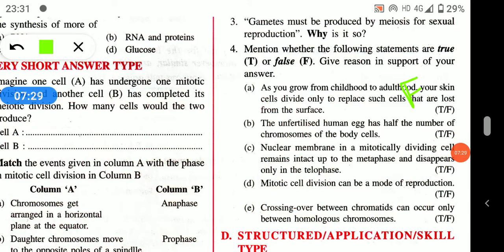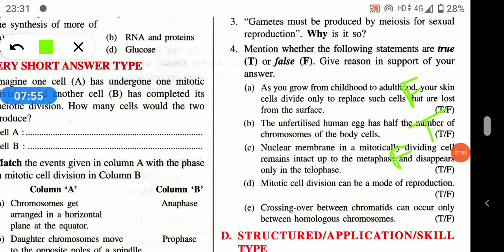Nuclear membrane in a mitotically dividing cell remains intact up to metaphase — this is false. The nuclear membrane disappears at prophase. Mitotic cell division can be a mode of reproduction — this is true, in the case of unicellular organisms.